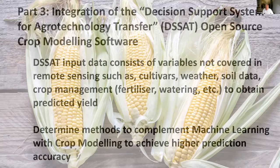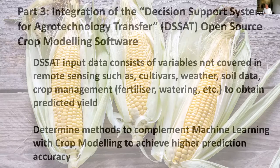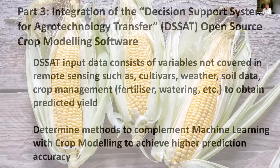The third part is the integration of the Decision Support for Agrotechnology Transfer, or DSSAT — a popular open-source crop modeling software. DSSAT incorporates data not covered by remote sensing, such as cultivar types, soil data, and crop management details like fertilizer use and watering methods, to obtain predicted yield. The goal is to determine methods to complement machine learning with crop modeling to achieve higher prediction accuracy.